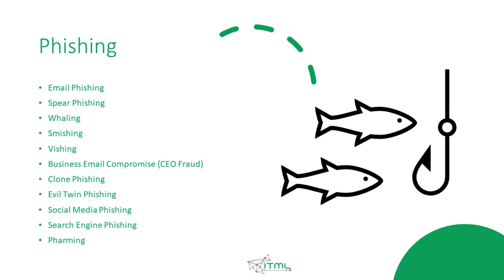A business email compromise is an interesting case where the attacker is impersonating someone important from your company, like the CEO or your manager. Clone phishing and evil twin phishing usually use a normal email you received, and the second email seems to be from the same person, but is actually from someone trying to phish you. Social media phishing uses social media to contact you and try to deceive you. Even your search engine might be compromised and give you results that are not true.